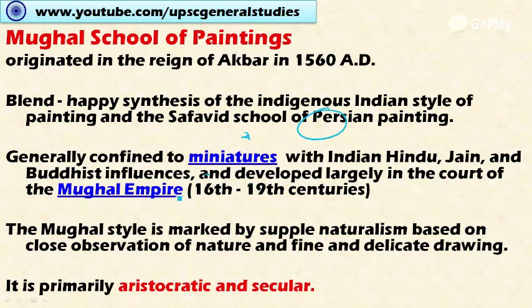Mughal painting is generally confined to miniatures — small portraits painted on paper and cloth — rather than painting on walls. It is influenced by Hindu, Jain, and Buddhist traditions, and developed largely in the court of the Mughal Empire during the 16th to 19th century AD.